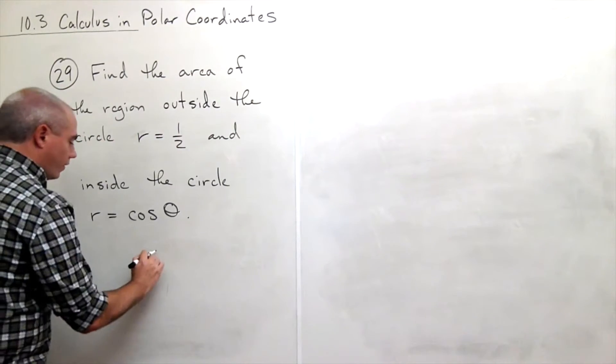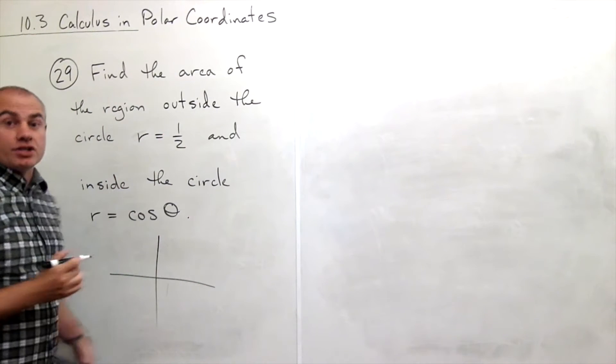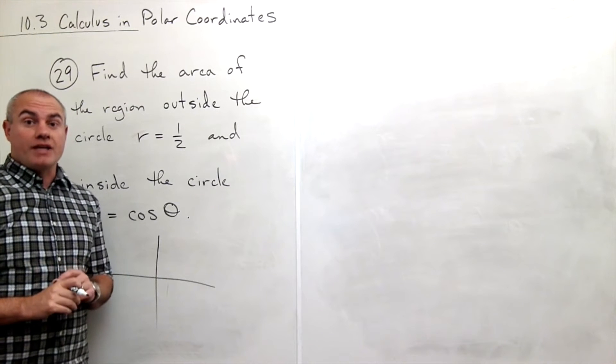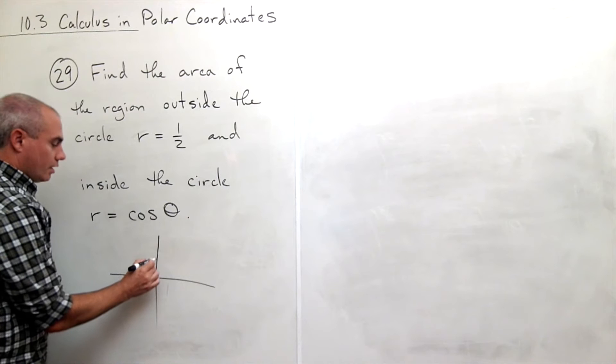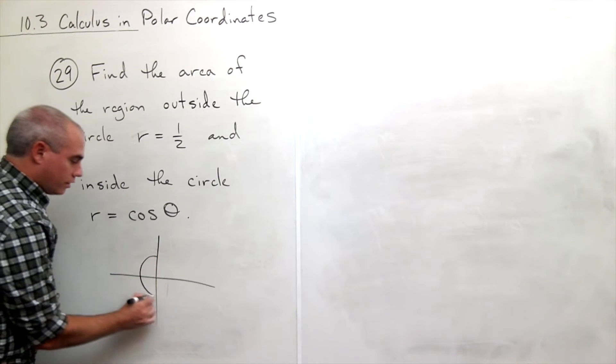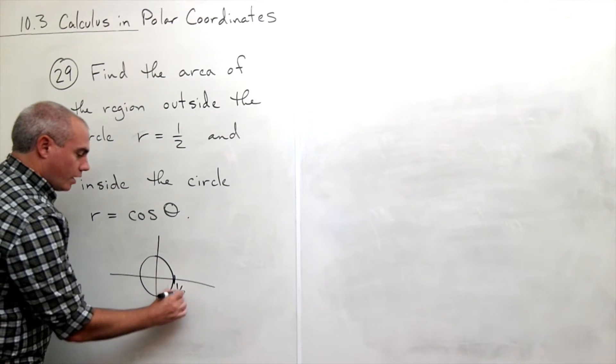Alright, so here's my x and y axis. r equals one-half is just a circle of radius one-half. So here's a circle. Its radius is one-half.